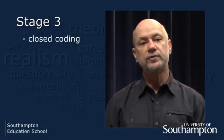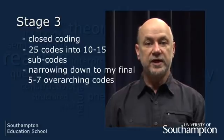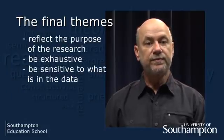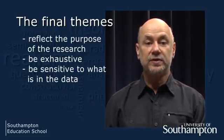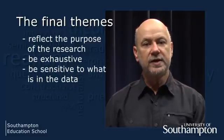Stage three is to code my codes. Some people may call this closed coding. The aim is to identify five to seven overarching themes or categories that group your open codes. I usually do this in several stages: firstly reducing my 25 codes into 10 to 15 subcodes, then narrowing those down to my final five to seven overarching codes. Remember, there are no hard rules. The final themes should reflect the purpose of the research, be exhaustive — you must place all the data in a category — and they should be sensitising, sensitive to what is in the data. For example, themes and subthemes should be able to discriminate between leadership and transformational leadership.